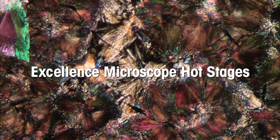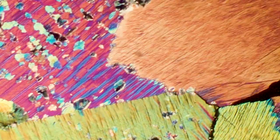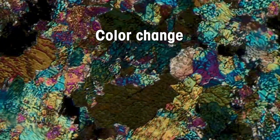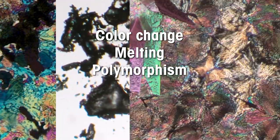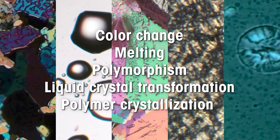A picture is worth a thousand words. Hot stage microscopy is a powerful method to visually examine and capture all kinds of thermal transitions: color change, melting, polymorphism, liquid crystal transformation, and polymer crystallization.